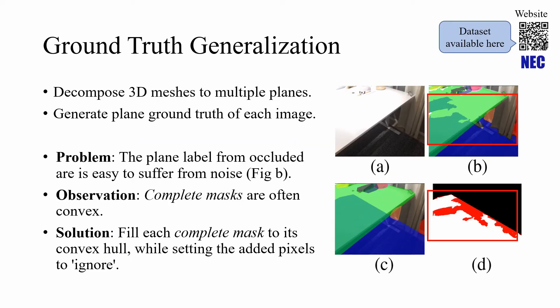For training, we need to generate the corresponding ground truth. To do this, we first decompose a 3D mesh to multiple planes. Then, we generate the plane ground truth of each image with corresponding camera parameters. However, we find the ground truth in occluded area always suffers from noise, as shown in figure B.